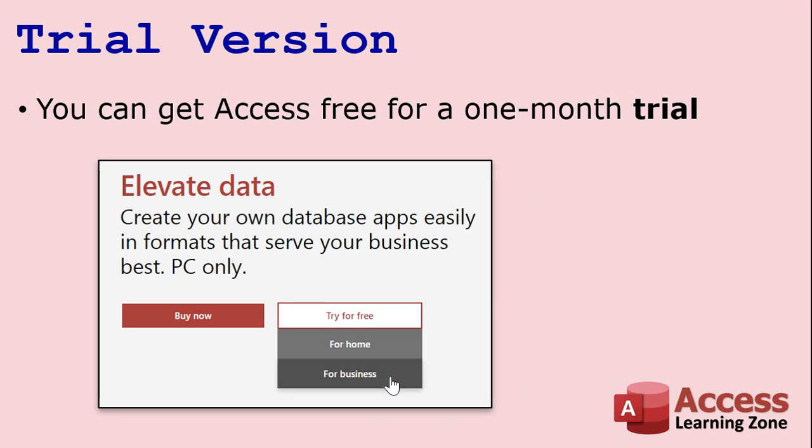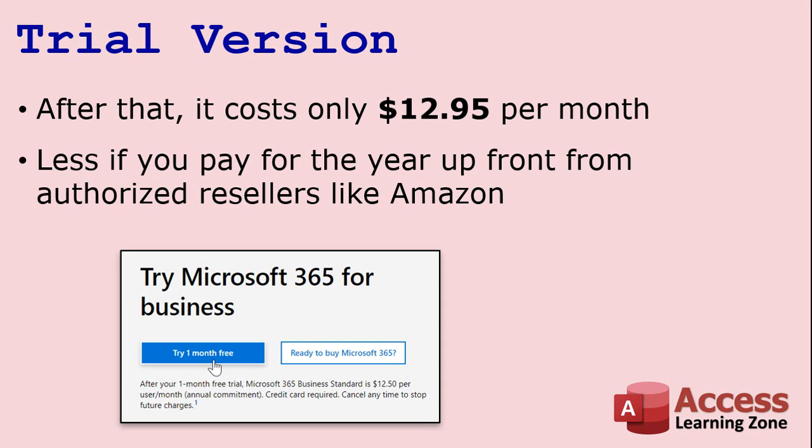First, if you don't have Access already, you can sign up for a free one-month trial on Microsoft's website. Make sure you pick the Business Edition because the Home Editions don't come with Access. After your free month, it only costs $12.95 per month to run Microsoft Office on your computer. That's the price as of the time I'm recording this video — currently November of 2020 — so they may change it in the future.